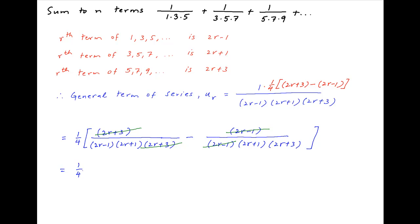In the first term, (2r+3) cancels across the numerator and denominator, and in the second term (2r−1) cancels. Therefore ur equals (1/4) times [1/((2r−1)(2r+1)) minus 1/((2r+1)(2r+3))].